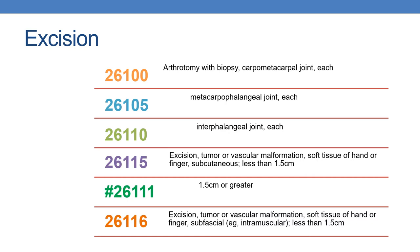Now coming to excision. The first CPT for excision is 26100: arthrotomy with biopsy, carpometacarpal joint, each. For metacarpophalangeal joint, each, you need to assign 26105. And for interphalangeal joint, you need to assign 26110: arthrotomy with biopsy.